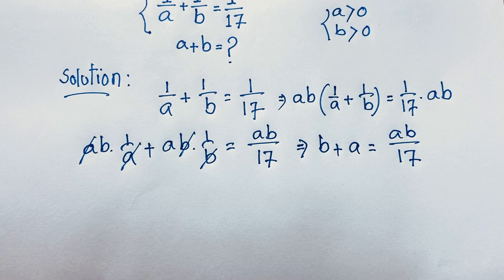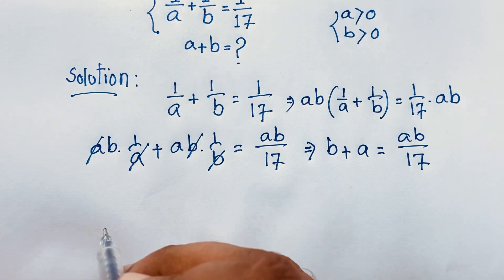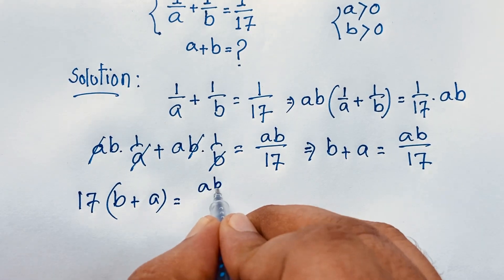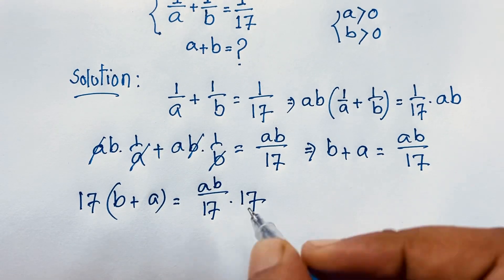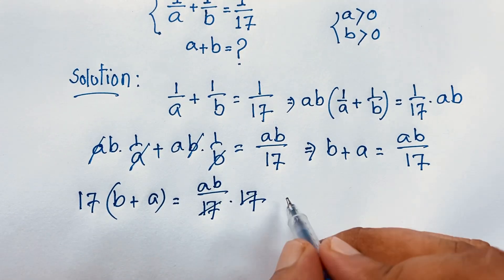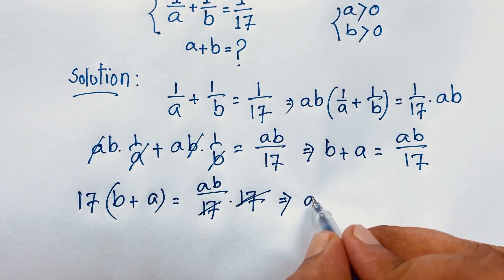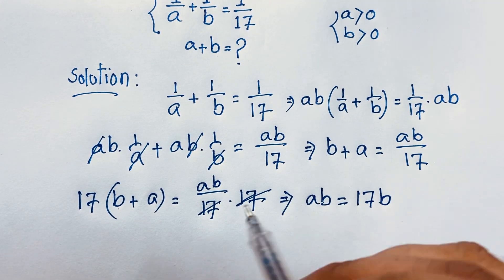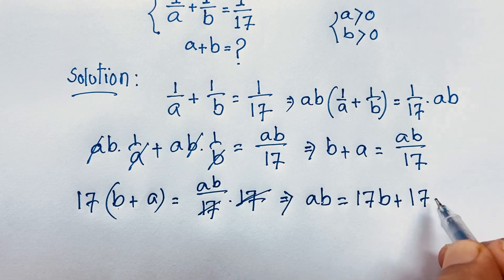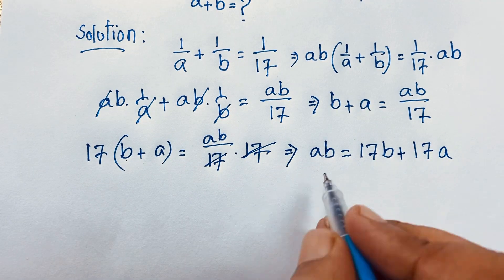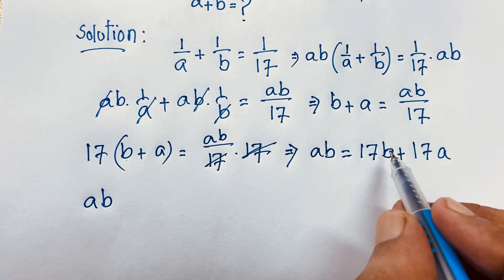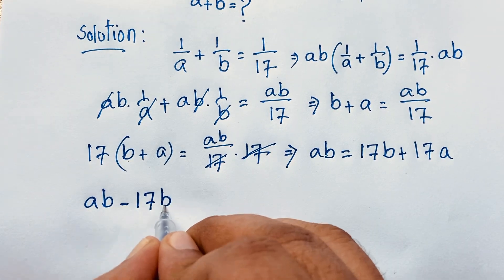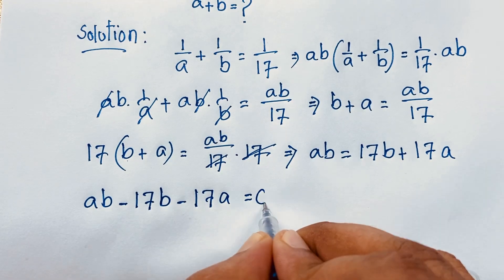Now I multiply both sides by 17. So it will be (B plus A) times 17 is equal to AB over 17 times 17. This and this cancel out. We are finding out: AB is equal to 17B plus 17A. If I move these values to this side, both become negative: AB minus 17B minus 17A is equal to 0.